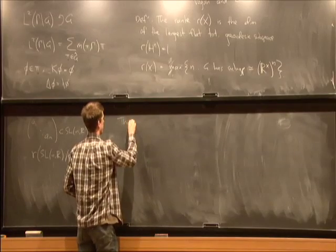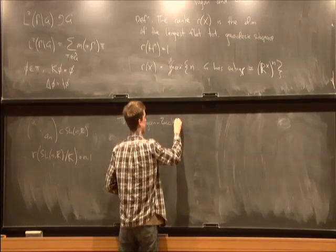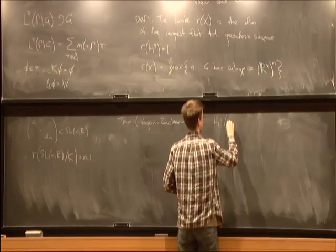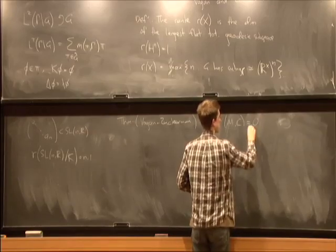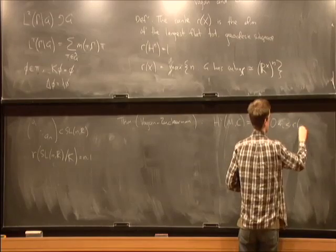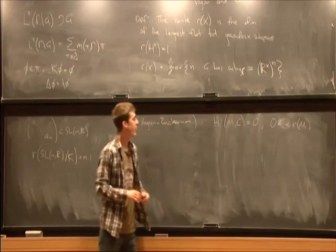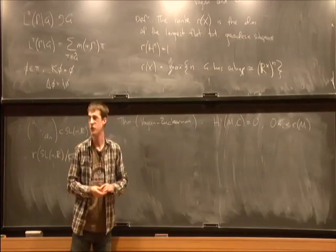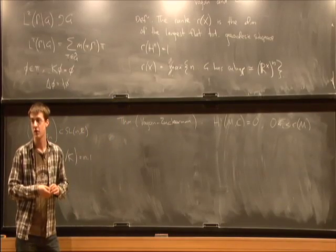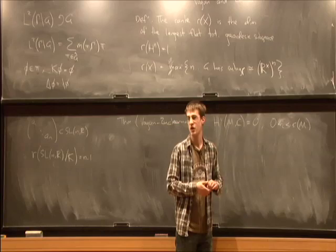For SL_n(R), for instance, the biggest such subgroup is the group of diagonal matrices, and this has dimension n minus 1. So the rank of SL_n(R), or the locally symmetric space associated to that, equals n minus 1. That's the definition of the rank of a globally symmetric space and all its associated locally symmetric spaces. The theorem, again, is a consequence of Vogan and Zuckerman's classification.